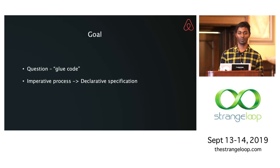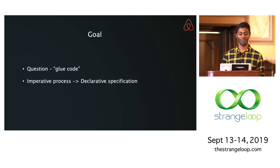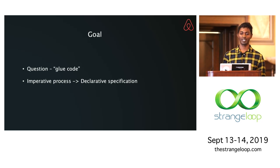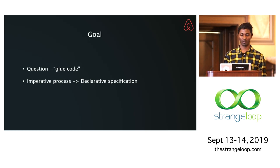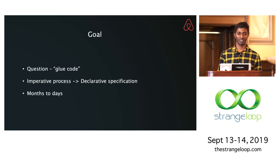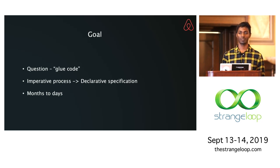This is a fairly imperative process in the sense that you need to spell out what you need to do throughout the workflow instead of declaring a specification. To really enable a data scientist to take an idea into production, this needs to be declarative — the data scientist needs to say what needs to be done instead of how. This is also very expensive in the sense that all this gluing together is what makes a project take six months to a year instead of days.